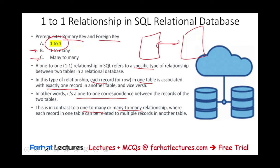One-to-one is not a common relationship type, but we need to understand it. If you understand one-to-one, it becomes easier to understand one-to-many. It doesn't mean one-to-one doesn't exist — you'll see why it's uncommon and when it's used once we look at the example.